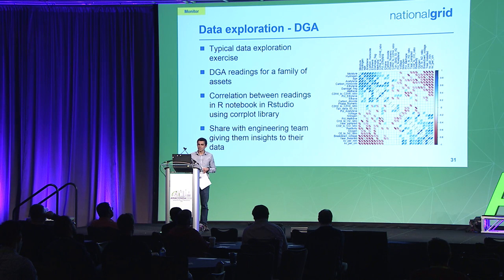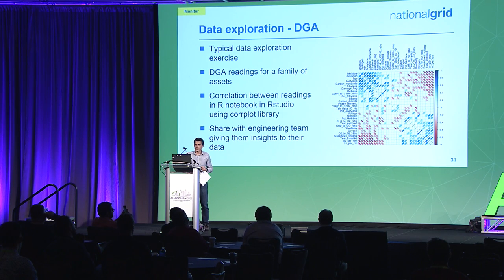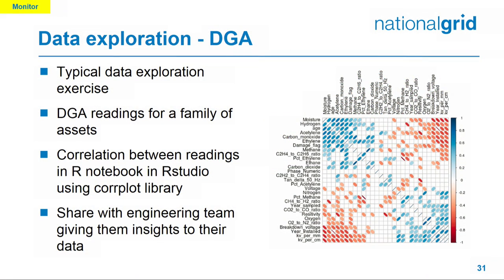The typical data exploration thing that we do with R and Python is the correlation matrix. People find packets of data across the company, they'll send it to us and we'll have a look to see if there's anything meaningful there. In this example, we use the R Studio R Notebook, and we can send it back to the engineers — we can create an HTML file and send it back so they can have a look at it.